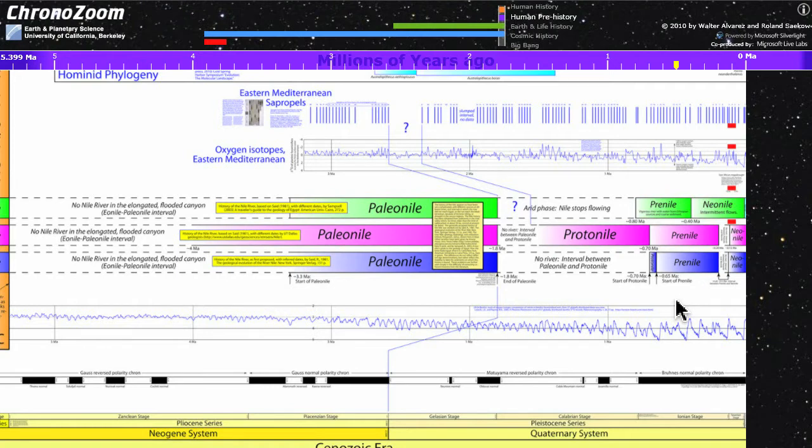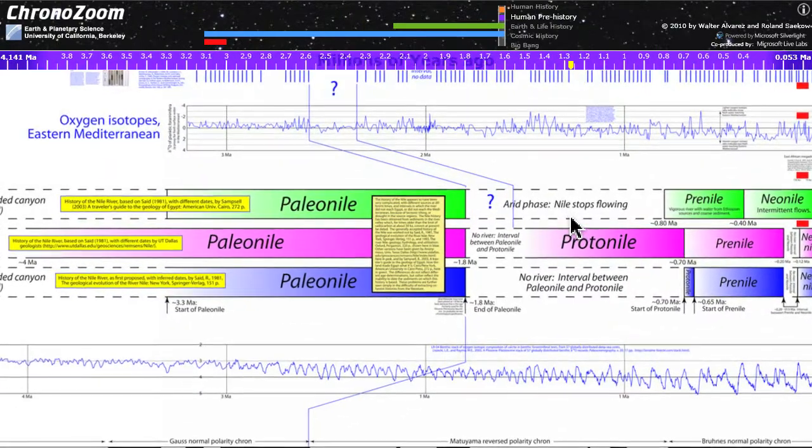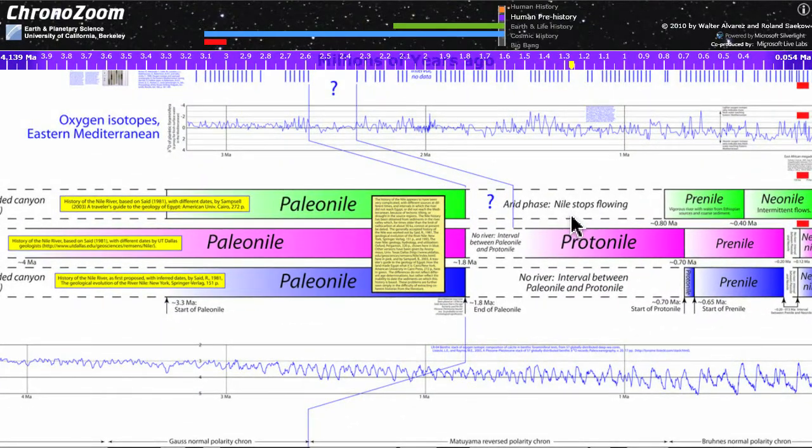The reason there are three different bands there with different colors is that different geologists have different interpretations of what happened. For example, Paleo Nile was a time when there was a Nile river flowing. But over here to the right where it's white, the Nile may simply not have flowed at that time because either the climate was too arid or there was not enough water coming in from the high country of East Africa.